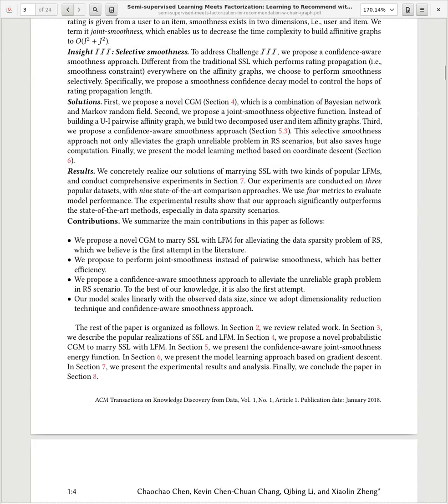Right, so where we have contributions. We summarize the main contributions of the paper as follows. We propose a novel chain graph model to marry semi-supervised learning with latent factor models for alleviating data sparsity problem of recommender systems, which we believe is the first attempt in the literature. We propose joint smoothness instead of pairwise smoothness, which has better efficiency. We propose confidence-aware smoothness approach to alleviate the unreliable problem in recommender system scenario. The best of our knowledge, this is the first attempt. Our model scales linearly with the observed dataset, since we adopt the dimensionality reduction technique and confidence-aware smoothness approach.